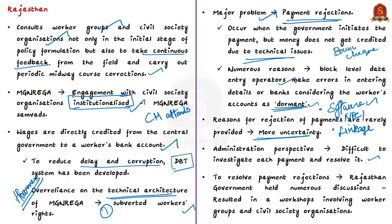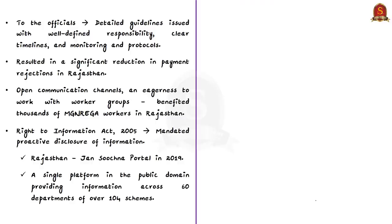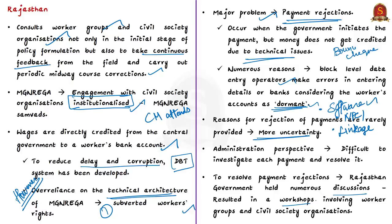To resolve this payment rejection problem, the government of Rajasthan held numerous discussions resulting in workshops involving worker groups and civil society organizations. They directly interact with aggrieved workers, administrative officers from village level to state level, and even with bankers to know where the problem is, and if there is any problem, it is resolved at that stage itself.